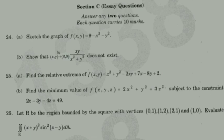Find the relative extrema of f(x,y) = x³ + y² - 2xy + 7xy + 2y + 2. This involves finding relative maximum and minimum.